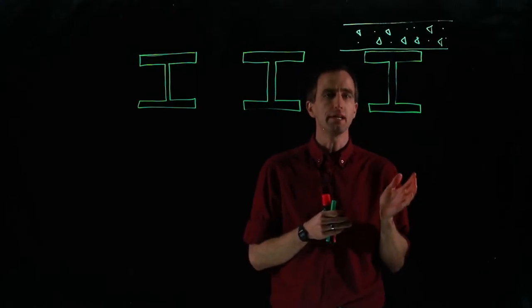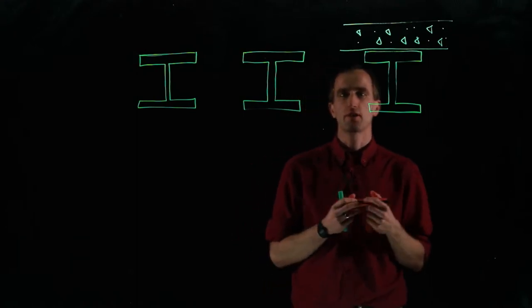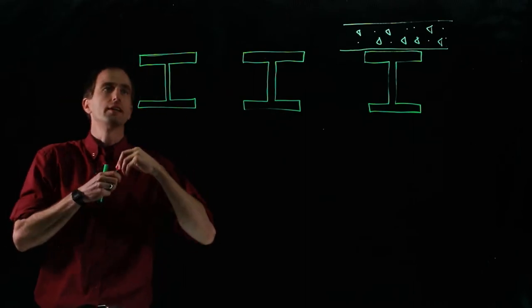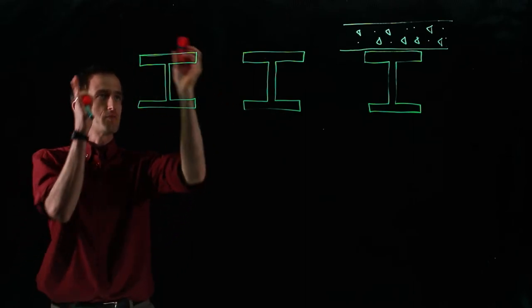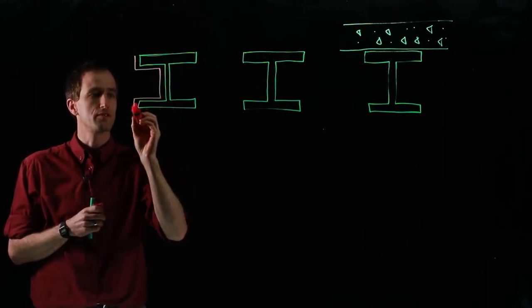If you think about the section factor from the beginning of your design, you may actually come up with an overall cheaper structure. For instance, here we've got an I-beam, H-beam, whatever it is, could be a channel. Once a fire is burning around it, it's going to absorb energy from all its exposed surfaces.